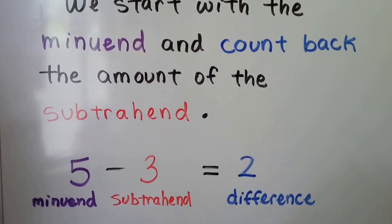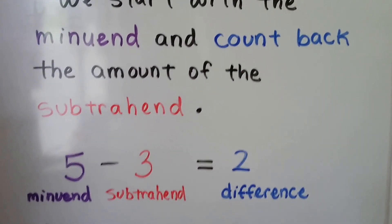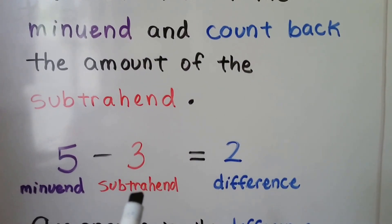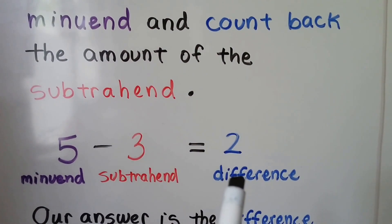In a subtraction sentence, the first number is the minuend. That's our purple 5. This number is the subtrahend. It's the number we're taking away. Our answer is the difference.